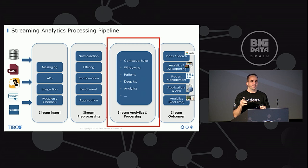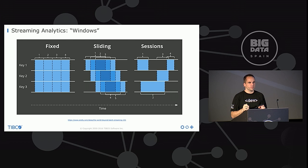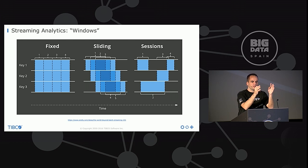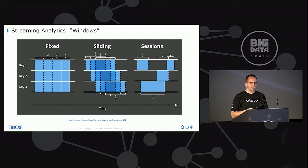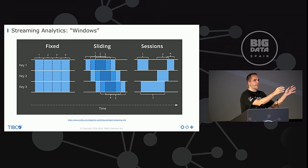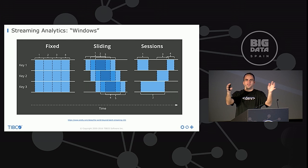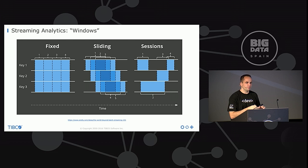In the analytics part, the key difference is that you do not use request-response, but instead you use windows — a completely different programming model. The easiest is fixed windows, where all windows have the same time slot, configurable by tuple or by second. Then you have sliding windows, which are more interesting: you start at second zero, monitor five seconds, then slide — from second one to six, two to seven — continuously analyzing data before it's stored in a database, without request-response. There are also sessions — for example user browser sessions that vary in length, defined by the user or machine rather than a fixed duration.